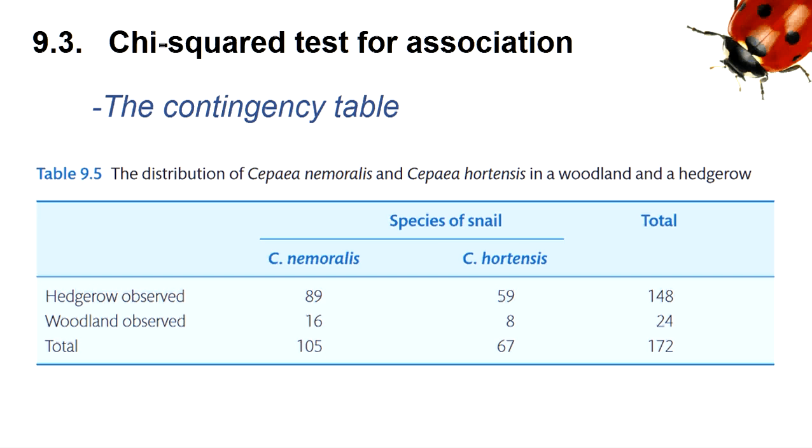Being a chi-squared test, the program requires expected values to compare our count data to. We can determine the expected values from the data itself using a process called cross-tabulation by constructing a contingency table. See box 9.1 in the book. Fortunately, the program will calculate the values for us before doing the chi-squared analysis.